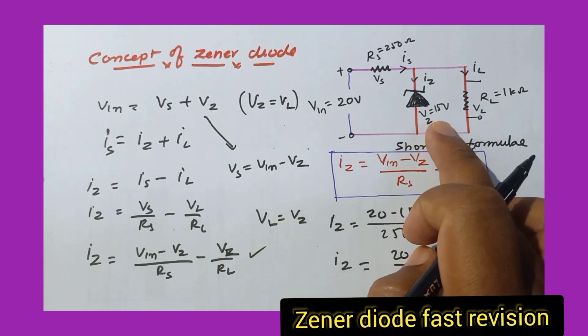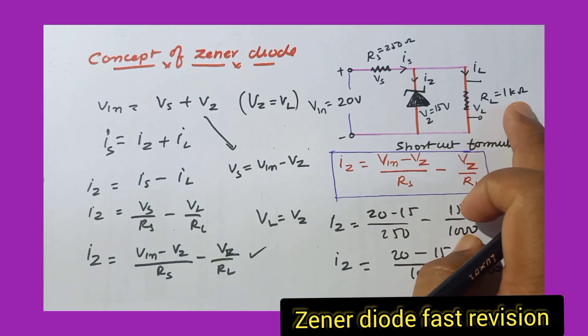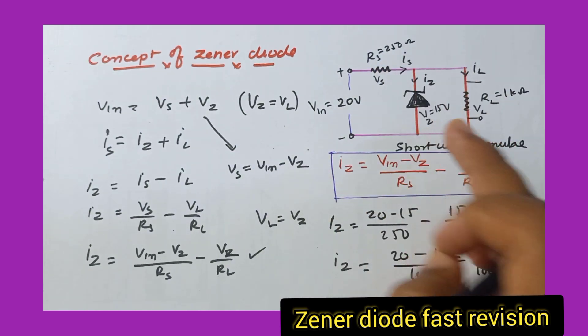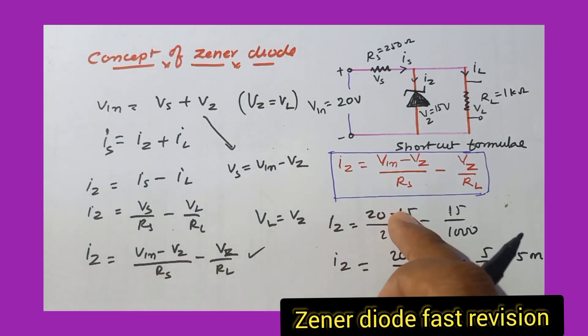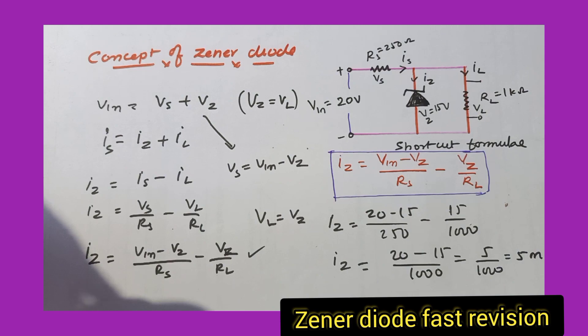When input voltage is 20, Zener voltage is 15, and load resistance is 1k, series resistance is 850. This problem is already given in the playlist of semiconductors in a shortcut method. Single step formula. This single step formula is sufficient to solve any problem of Zener diode. Thank you very much.